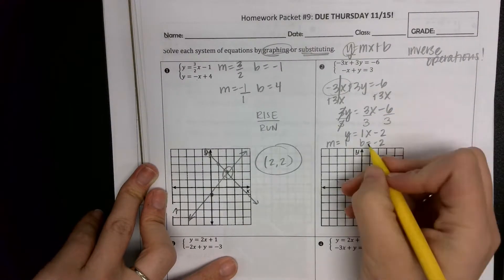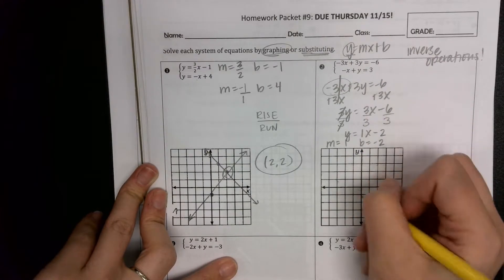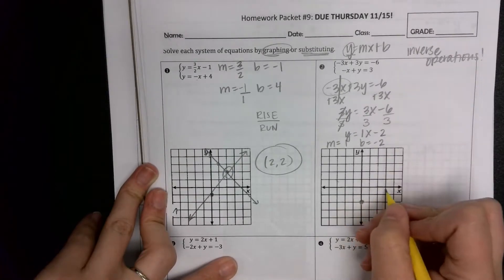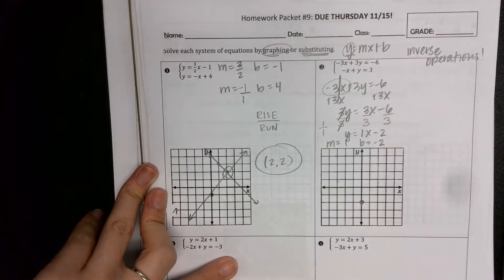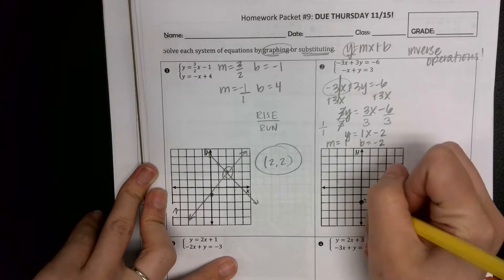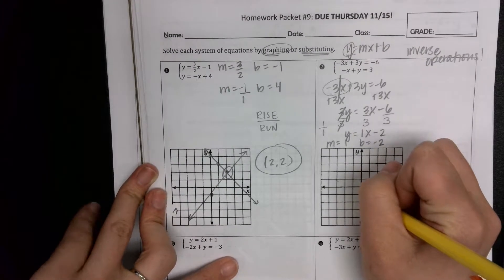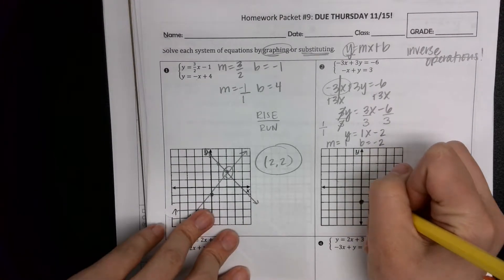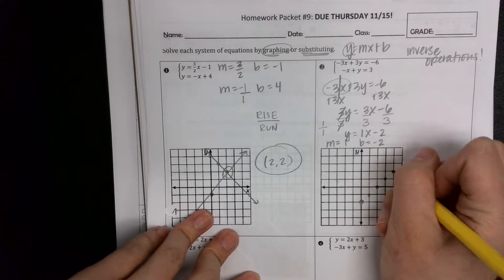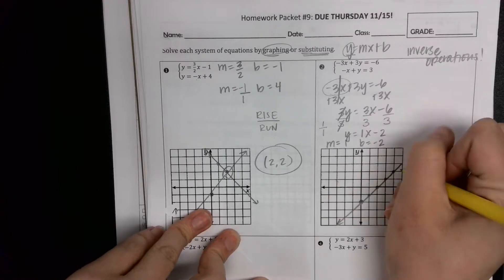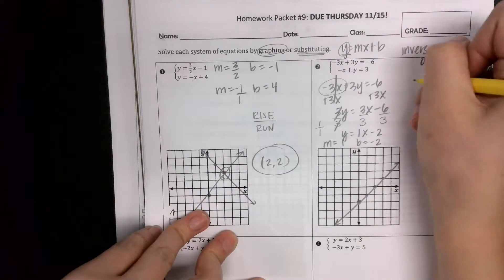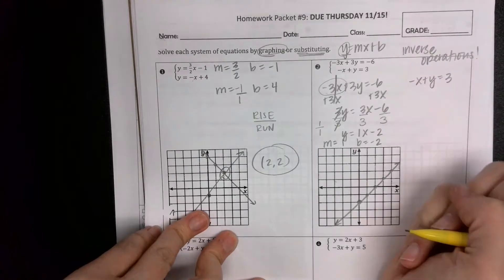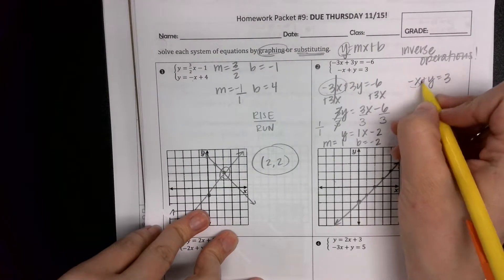So I'm going to go ahead and graph that one. I always start with my b value, negative two — I go down to negative two. If my slope is one, this is one over one. It's positive. So Alan, when I use my rise over run, will I go up one for positive or down one? Up one, and then to the right one since the denominator is positive. I'm going to do a couple of points to make it easy. Does negative x plus y equals three? This isn't in y equals mx plus b form. I have to move my negative x.